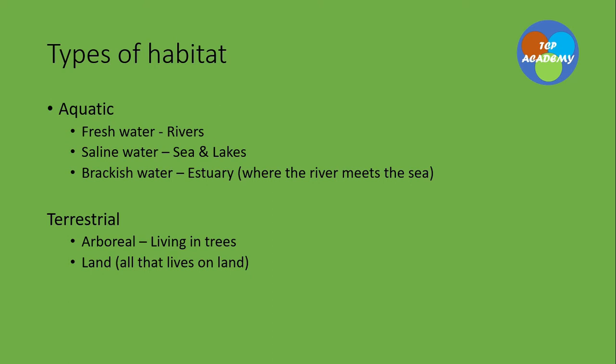Then there is terrestrial, which refers to habitat that is on land. Those habitats related to trees on land, we refer to them as arboreal. And on land itself, of course, that's where we'll have some organisms live.